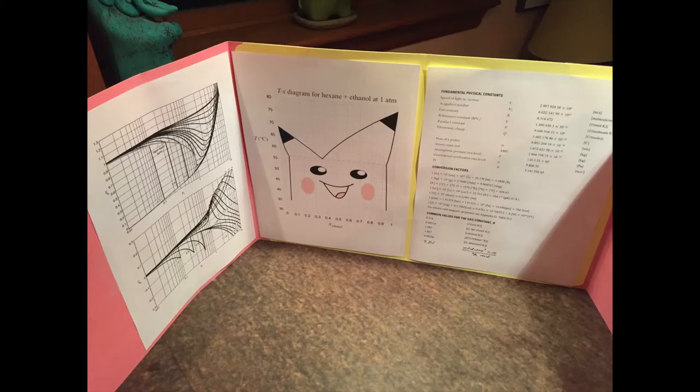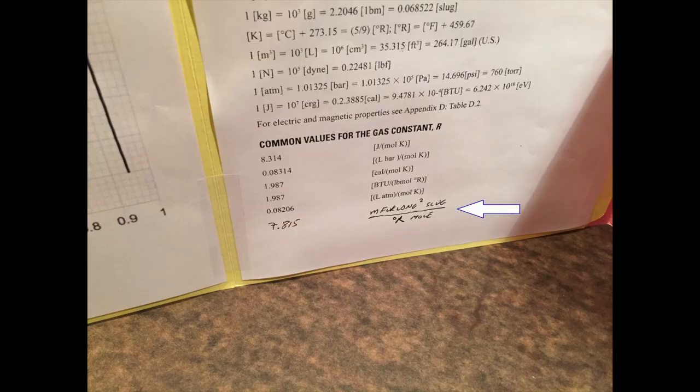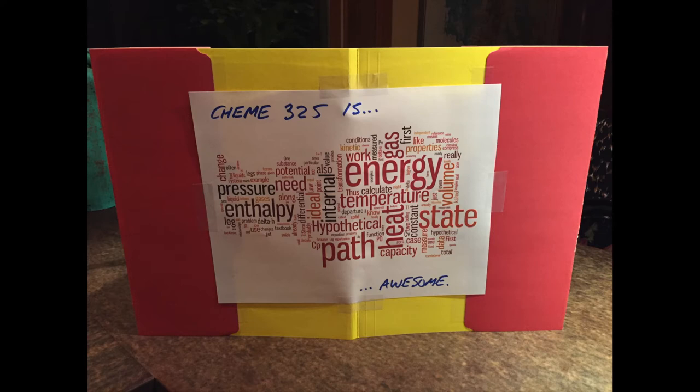Step three is to personalize your workspace with inspirational images or useful information you might want during your exam. For example, handy data charts, conversion factors, or useful constants in various systems of units. Here's my personal favorite. Did you know that R is 7.815 millifurlong squared slugs per Rankin mole? You may also decorate the outside of your screen with team logos or commercial advertising. But please be respectful to your fellow students by not having anything too distracting.